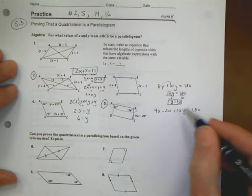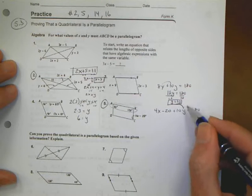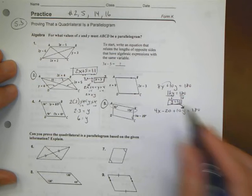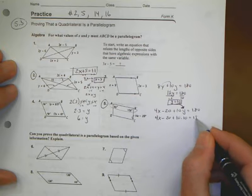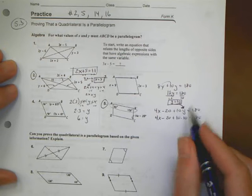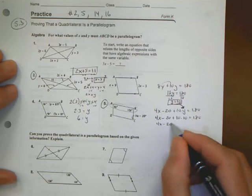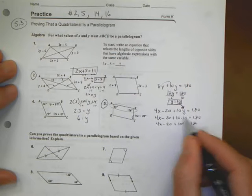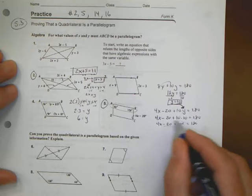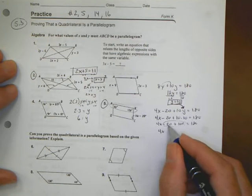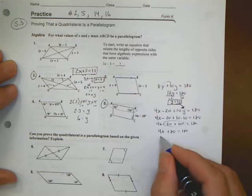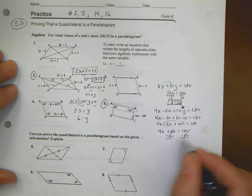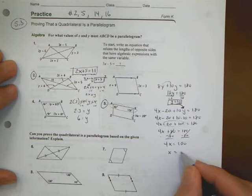Now because I know y is 10, I can then use that number and add it back into my other equation. So 4x minus 20 plus 10 times 10 equals 180. 4x minus 20 plus 100 equals 180. I can combine like terms. 4x plus 80 equals 180. I'm going to subtract 80 from both sides. 4x equals 100, leaving me with x equals 25.